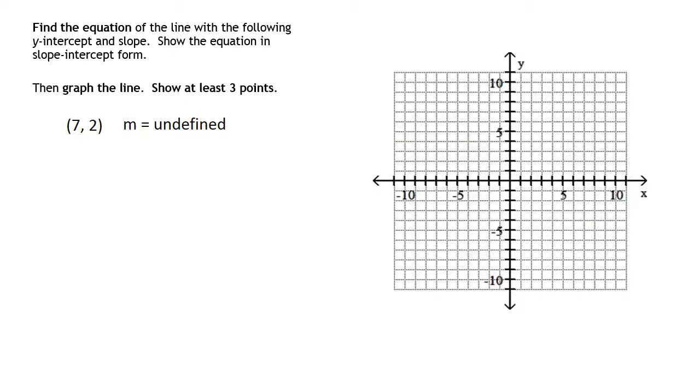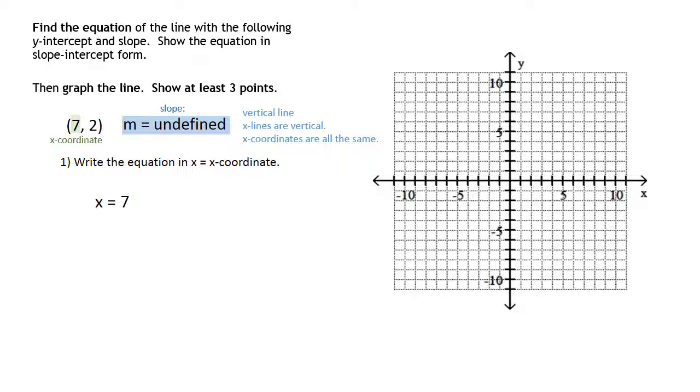The last example is a point with an undefined slope. The slope is the flag. An undefined slope is a vertical line. You cannot stand on a vertical line. There is no treadmill setting for a vertical line. So all x lines are vertical. And all x-coordinates will be the same in a vertical line. So let's look at the x-coordinate in the point that they gave us. And it is 7. We're going to write the equation in x = x-coordinate format. Because we want all of our x's to equal 7.